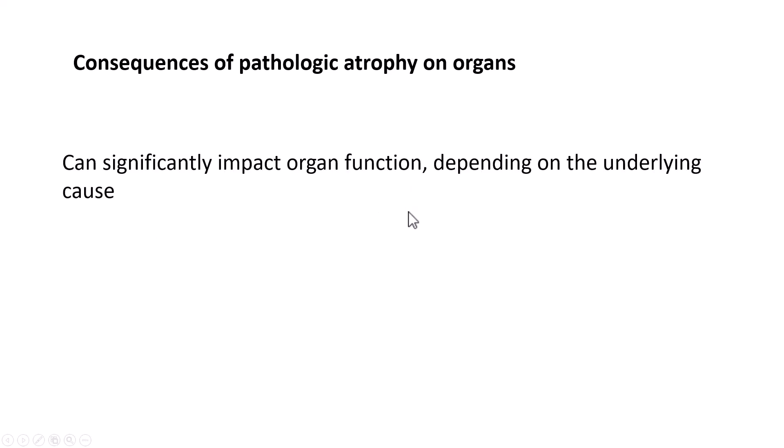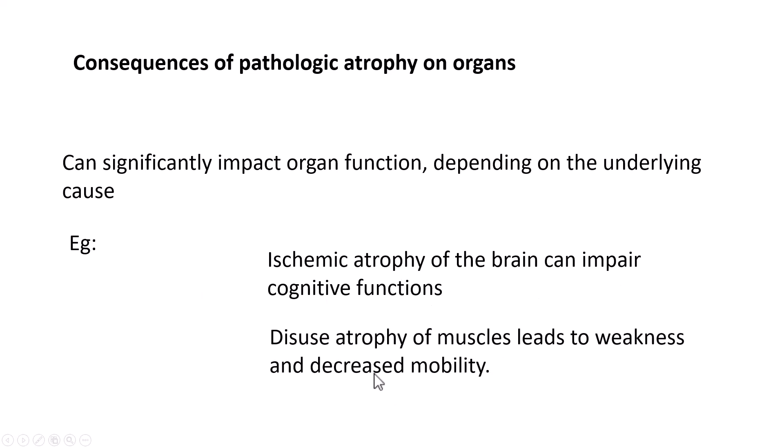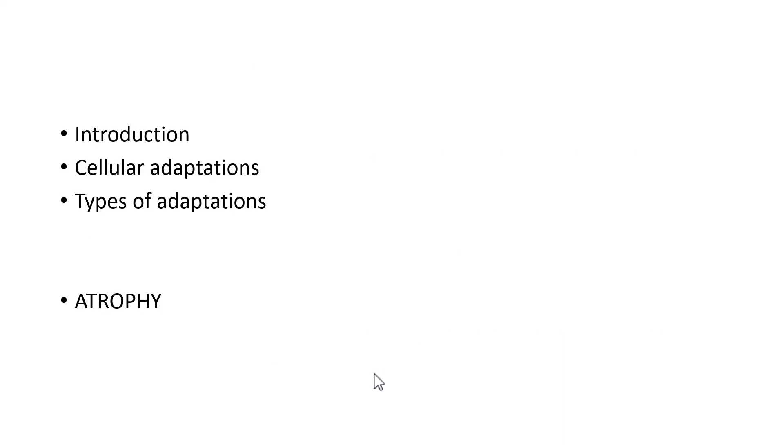What are the consequences of pathologic atrophy on organs? It can significantly impact organ function depending on the underlying cause. For example, ischemic atrophy of the brain can impair cognitive functions, and disuse atrophy of muscles can lead to weakness and decreased mobility. So there will be functional impairment of these atrophied organs. With this, we have completed understanding the concepts of cellular adaptations, the types of adaptations, and we have learned in detail about atrophy.